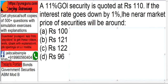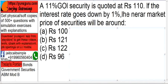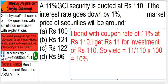Second question: an 11% Government of India security is quoted at 110. If the interest rate goes down by 1%, what will the market rate of the security be? Here, 11% is the coupon rate. If I buy this bond I pay Rs. 110, and at year end I get 11%. So the yield is 11 upon 110 into 100, which is 10%.